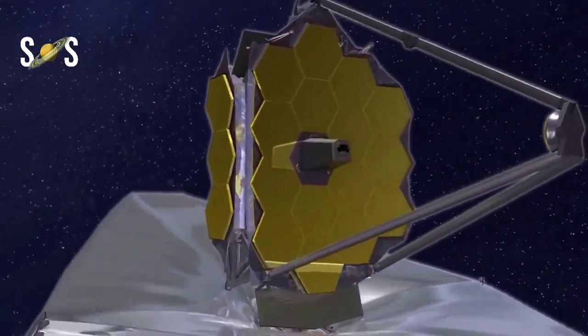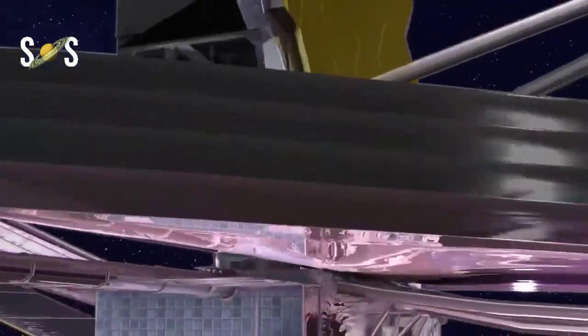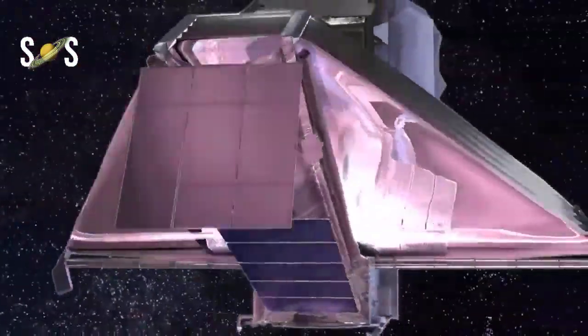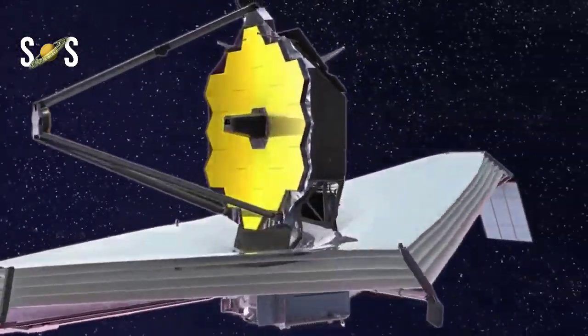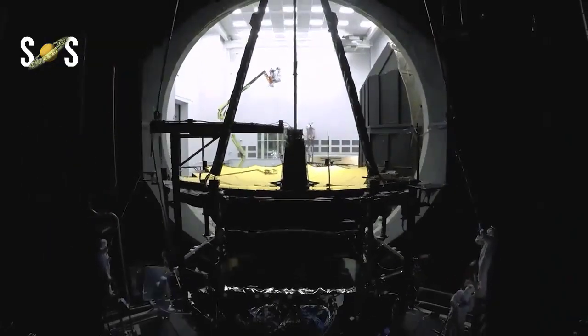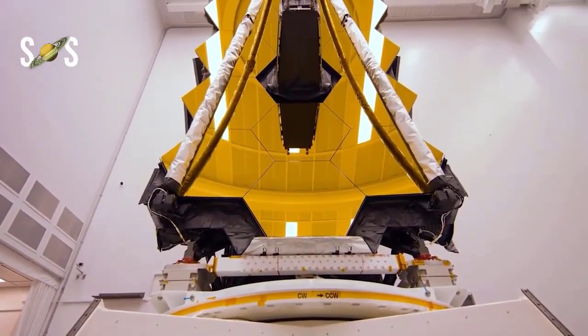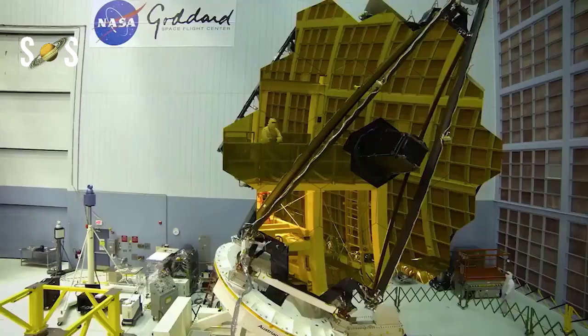To ensure the mirrors are both strong and light, the team made the mirrors out of beryllium. Beryllium is a light metal that has many features that make it desirable for Webb's primary mirror. In particular, beryllium is very strong for its weight and is good at holding its shape across a range of temperatures.